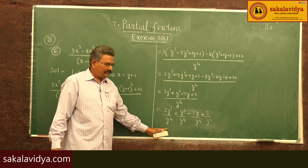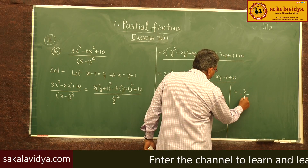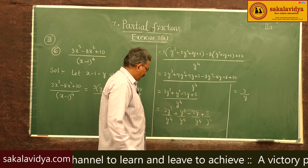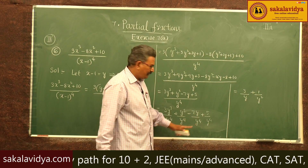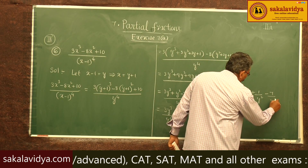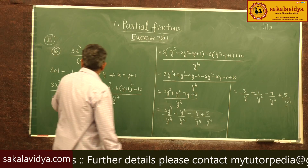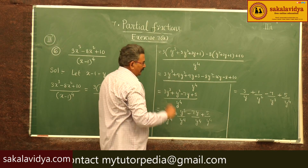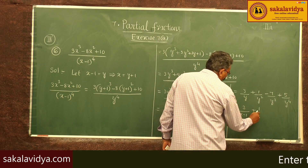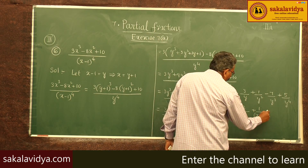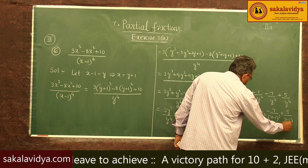Simplifying each term: 3 over y, plus 1 over y squared, minus 7 over y cubed, plus 5 over y to the power of 4. Since y equals x minus 1, substituting back gives the required partial fractions: 3 over (x minus 1), plus 1 over (x minus 1) squared, minus 7 over (x minus 1) cubed, plus 5 over (x minus 1) to the power of 4.